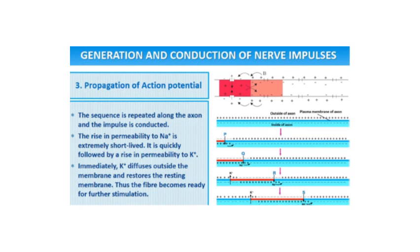This sequence keeps repeating along the axon and this is how the impulse is conducted. The rise in the permeability of sodium ions is extremely short-lived. It is quickly followed by a rise in the permeability of potassium ions. Immediately, K+ rushes outside the membrane and it restores the resting membrane. Thus, the fiber becomes ready for further stimulation.